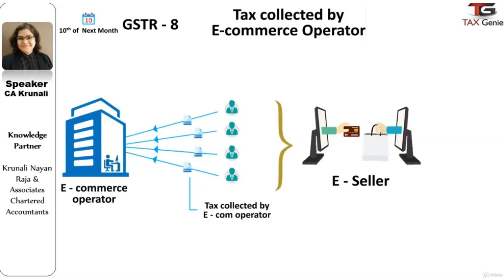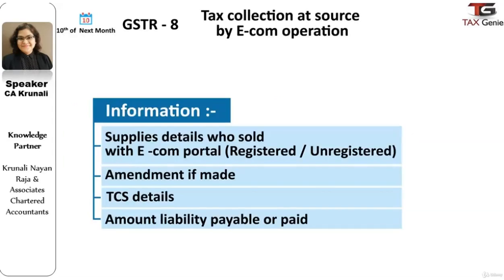The return would contain details of supplies to registered taxable persons made through the e-commerce operator, details of supplies to unregistered persons made through the e-commerce operator, details of tax collected at source, and the details of liability payable and the liability actually paid.